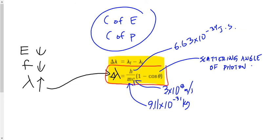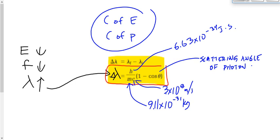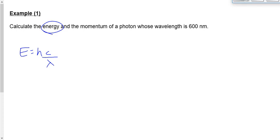I tried to derive this equation once and couldn't. I know it comes from the law of conservation of energy and conservation of momentum somehow combined, but exactly how I'm not sure. You don't have to derive any of these equations, let alone this one — you just have to be able to use them and understand where they came from. Let's take a look at our example: calculate the energy and the momentum of a photon whose wavelength is 600 nanometers.